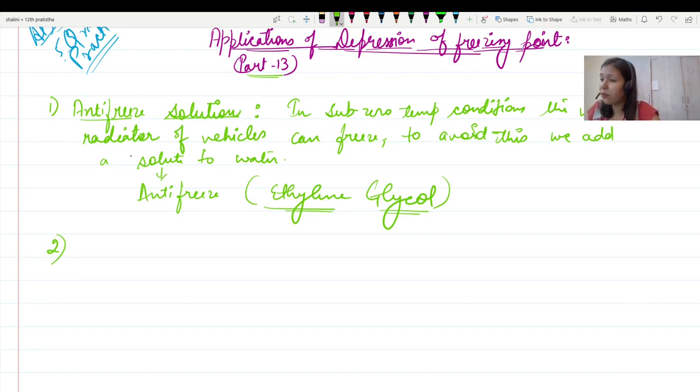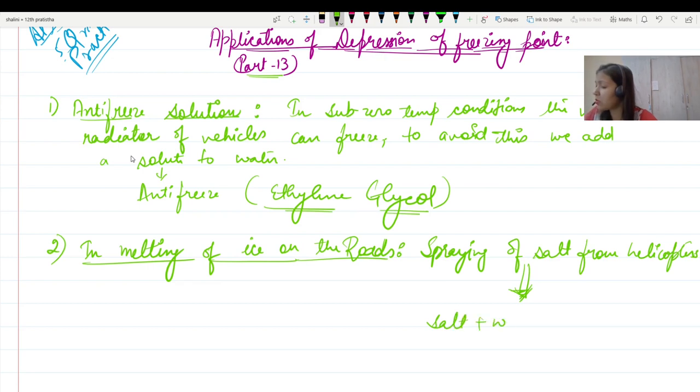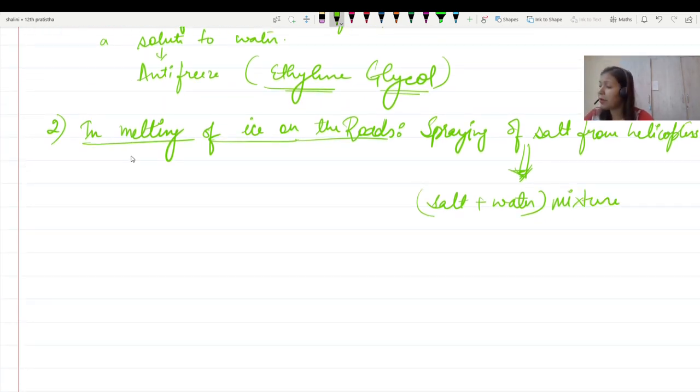The second case is melting of ice on the roads. By spraying of salt from helicopters, salt and water become a mixture. The freezing point of this mixture will be lower.